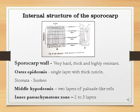Next we are going to see the internal structure of the sporocarp. The sporocarp of Marsilea is surrounded by a thick sporocarp wall. The wall is very hard, thick, and highly resistant to mechanical injury. The wall is differentiated into an outer epidermis, middle hypodermis, and an inner parenchymatous zone. The single-layered epidermis is made up of cuboid cells and is covered with a very thick cuticle. Some of the epidermal cells are elongated to form multicellular hairs, and in the epidermis you can find a large number of sunken stomata.